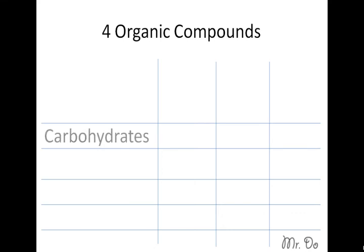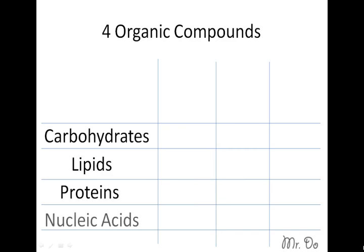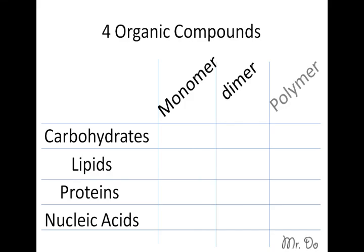Here are the four organic compounds to review: carbohydrates, lipids, proteins, and nucleic acids. These are divided into subcategories like monomer, dimer, which is not common, and the most common is polymer. Mono means one, di means two, and poly means many.